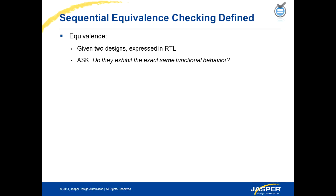How do you define equivalence checking? Given that there are two versions of a design — maybe two different versions, new logic added, or any changes made to the existing logic — how do you verify that they functionally behave exactly the same? This functional equivalence can be expressed in terms of combinational equivalence checking or sequential equivalence checking, depending on the kind of design.